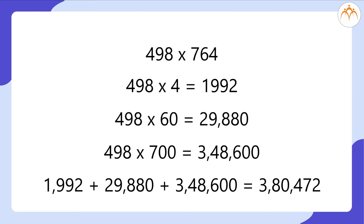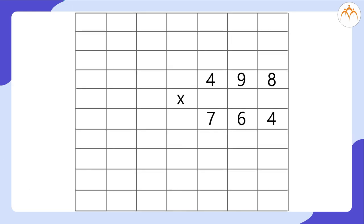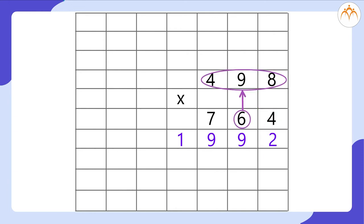How do we do it vertically? First, we multiply 498 by 4 to get the answer 1,992. Now we multiply 498 by 60. So before we multiply 498 by 60, we write a 0 at the units place. This 0 is because we are multiplying by 60. Then we simply multiply 498 by 6. We get the answer as 29,880.